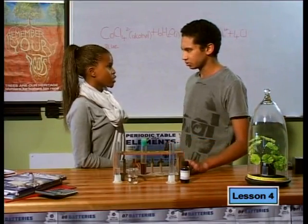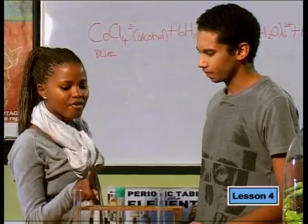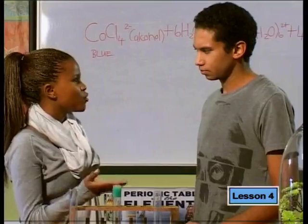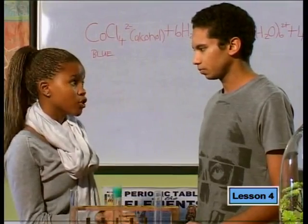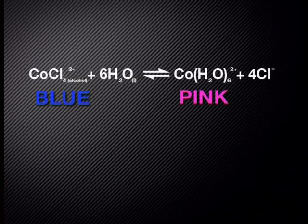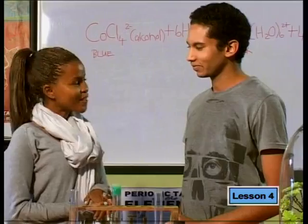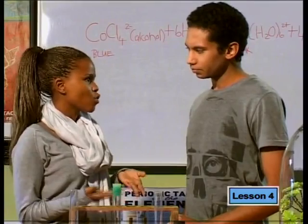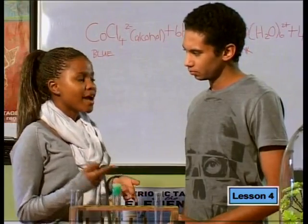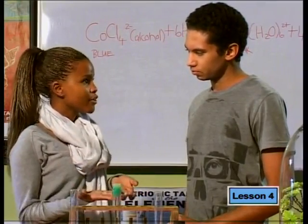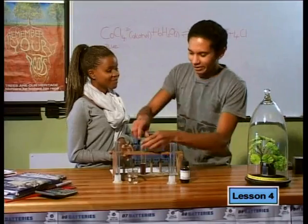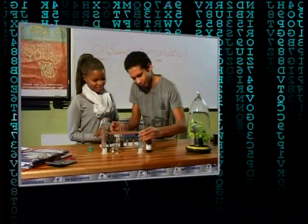If we add hydrochloric acid to the hydrated cobalt ions, the reverse reaction is favored — there will be more blue molecules than pink ones. But why add hydrochloric acid if it's not in the reaction? Because hydrochloric acid contains chloride ions, and there are chloride ions in the equation. So adding hydrochloric acid increases the concentration of chloride ions.